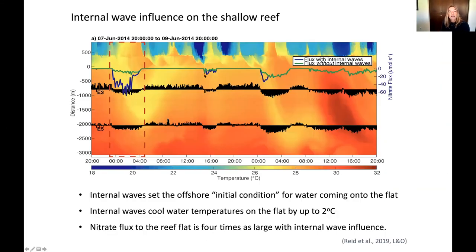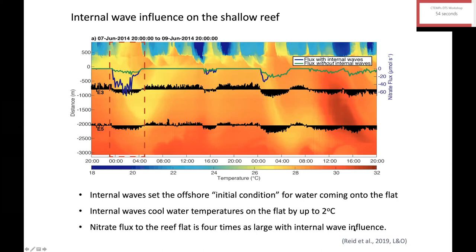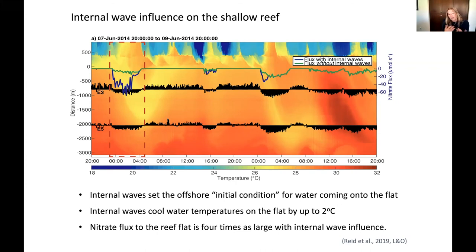We can also use the DTS cable on the reef flat itself — zero is the reef crest, above that is offshore, and everything shoreward is the reef flat — to look at temperature variability and how internal waves push cool water onto the reef flat, changing not only temperature but pH and nutrients. My student Emma has a paper in Limnology and Oceanography on this. It turns out internal waves can change reef temperature by up to two degrees and deliver up to four times as much nitrate to the reef, and the DTS has really helped us map that mass of water as it's transported across the reef.